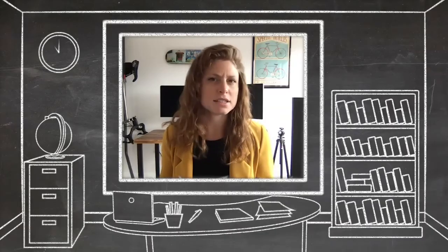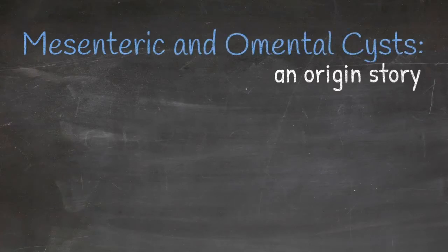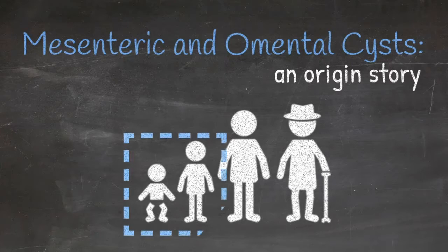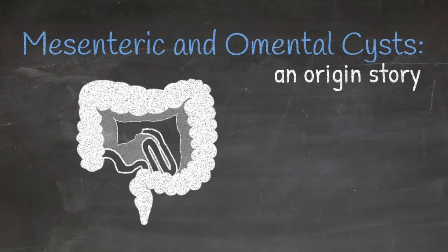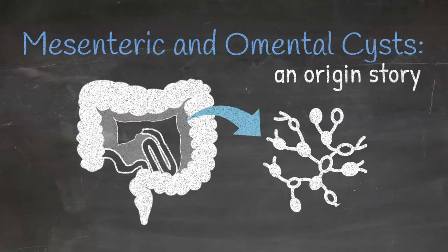What is a mesenteric cyst, and where does it come from? Mesenteric and omental cysts are actually quite rare, although about 60% of them will be diagnosed by the age of 15, so they most commonly present in kids. It's not totally clear where they come from, but the biggest theory is that it's a benign proliferation of lymphatics that are within the mesentery and don't communicate with the lymphatic drainage system.